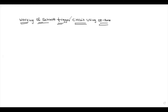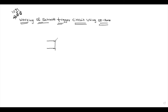The next concept is the Schmitt Trigger circuit using an operational amplifier. This is a very important question from the exam point of view — it is covered in the third unit, third chapter, on working of Schmitt Trigger circuits using operational amplifiers.